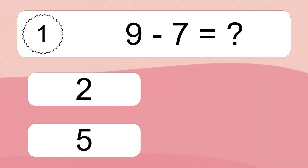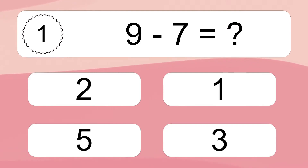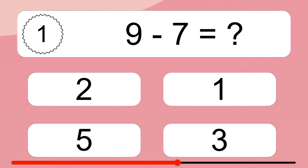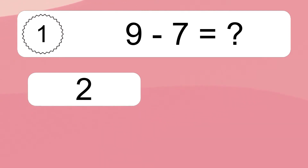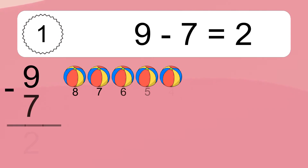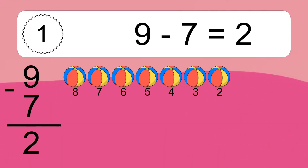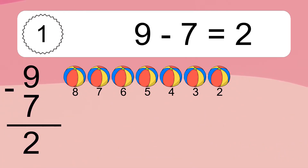9 minus 7 equals what? 9 minus 7 equals 2. Let's count it: 8, 7, 6, 5, 4, 3, 2.